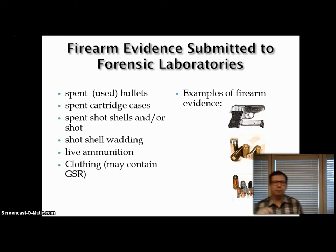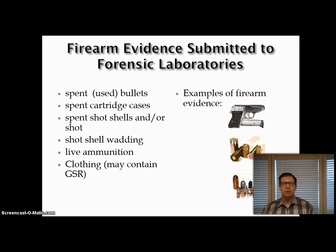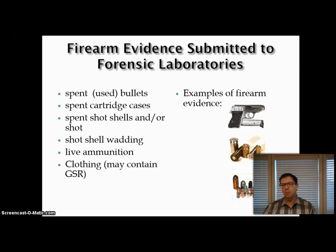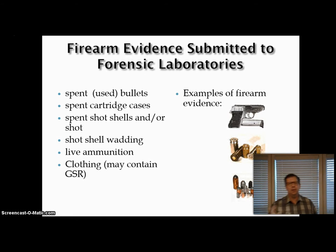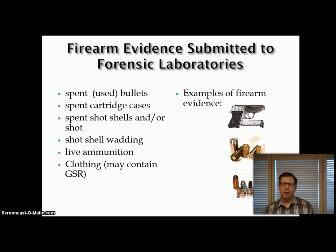Here are some things that get submitted to the forensic laboratory as ballistics evidence: the spent bullet, the cartridge case — and we'll learn the difference between a cartridge and a bullet in a minute. Also, shotgun shells or shot from shotguns can sometimes be ballistics evidence. There is a little piece called the wadding that comes out of a shotgun shell with the shot — it holds the shot in place inside the shell and comes out the muzzle, and can help identify what kind of shotgun was used. Live ammunition left at a crime scene and clothing may also contain GSR. Technically the person's body can be ballistics evidence if it has GSR on it as well.